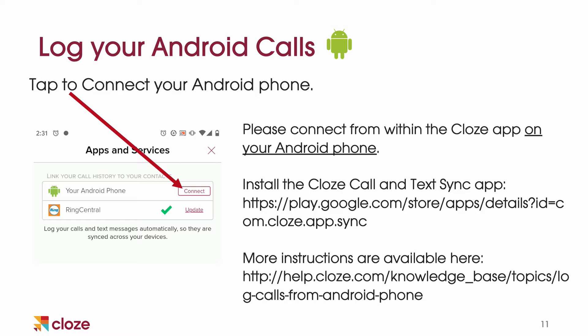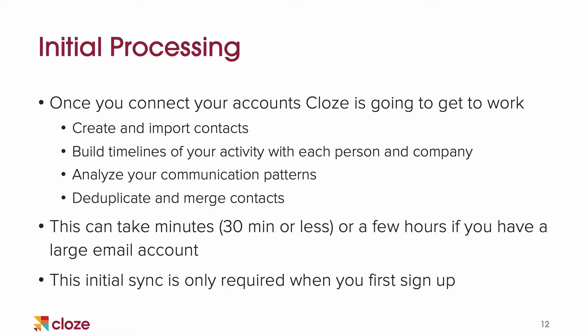This is one advantage for Android users and really the only difference between the apps. For Android users, we can automatically track your text message history right from the device. Apple's got a lot of privacy controls, so we can't do that for iMessage. After you're done connecting accounts, Close is going to get to work. We're going to create a single view of every person you know — you'll see all of your calls, emails, notes, files, everything brought together for you automatically.